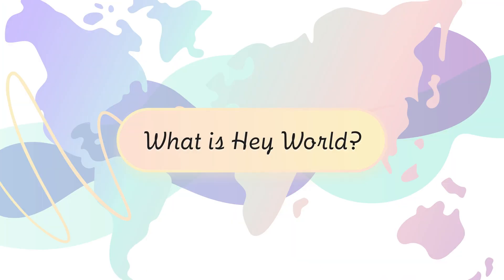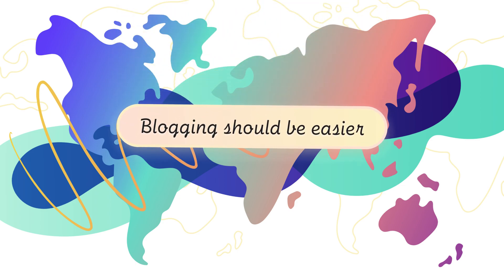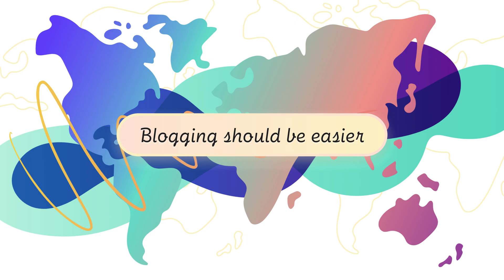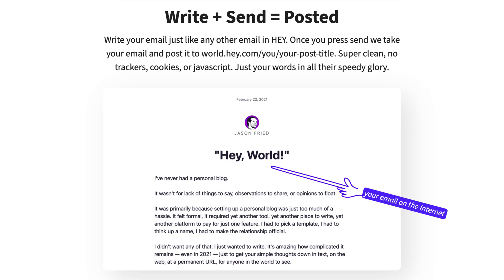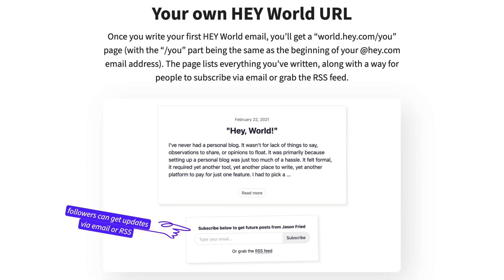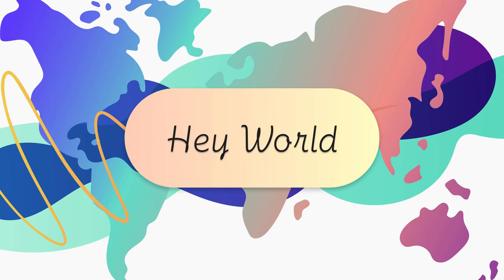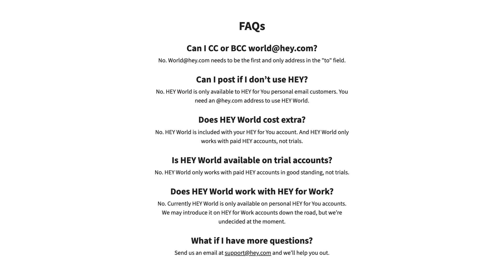So why does Hey World exist? Basically, the concept is that blogging in 2021 is easier than it's ever been. However, it's still a bit of a struggle to get people over the hump to doing it. The idea is: what if you were able to blog from your email app? You use Hey to write emails all day, you write tons of those, you send them off to people. But what if you could write an email and send it to the world? That's the idea of Hey World. At its very core, it's meant to be an easier way to blog with fewer options, fewer controls, but with an easier setup process — getting you from zero to something published in less time.